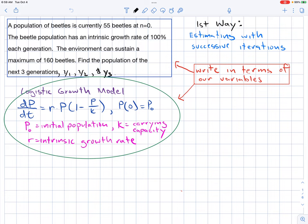Alright, so in this example we are looking at a population of beetles that currently has 55 and has an intrinsic growth rate of 100% each generation. The environment can sustain a maximum of 160 beetles. So, we want to find the population of the next three generations.